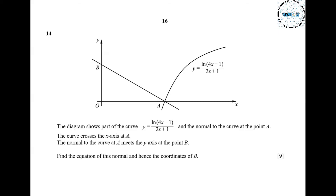Question number 14. The diagram shows part of the curve y equals ln((4x minus 1)/(2x plus 1)) and the normal to the curve at point A. The curve crosses the x-axis at A, and the normal to the curve at A meets the y-axis at point B. Find the equation of this normal and hence the coordinates of B. First we find the coordinates of A.